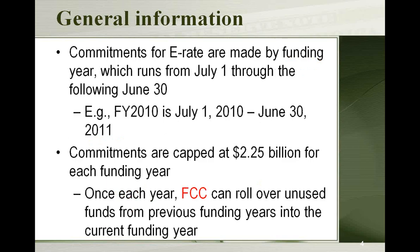Each state across the country has some sort of person who is their e-rate coordinator, who works with the Schools and Libraries Division of USAC to keep everyone in the state on track. E-rate funding is done by year, so every year you have to redo some forms — some forms you do, some you don't. Their funding year goes from July 1st through June 30th, so the upcoming funding year for 2010 starts next July, but right now is when you would be starting to complete forms for next year's funding year.